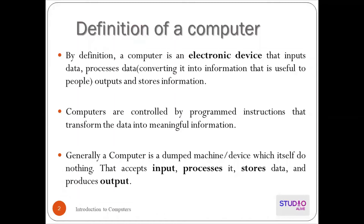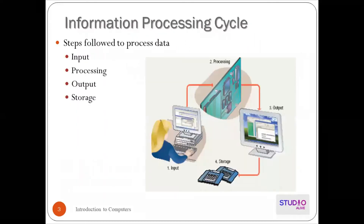Here we can see another, simpler definition. Generally, a computer is a dumb machine which itself does nothing. It accepts input, processes it, stores data, and produces output. It doesn't do anything until the user gives it input, and then it processes, stores, and displays information.